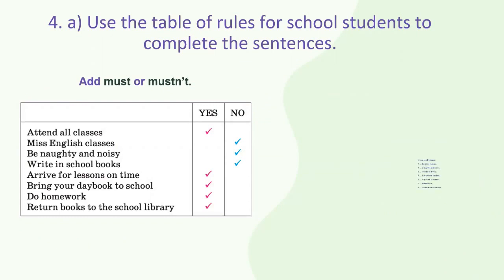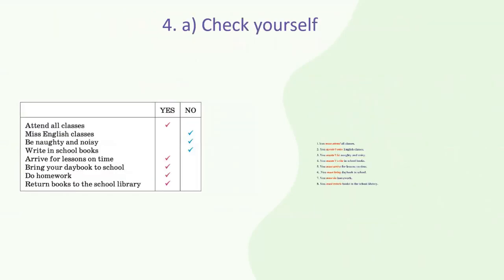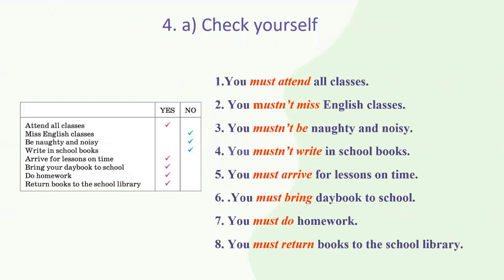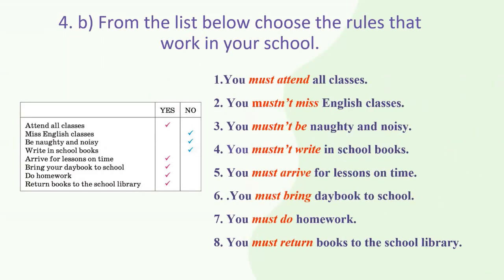Add must or mustn't. Pause the video — it is necessary for completing the exercise. Now let's continue and check yourself. From the list below, choose the rules that work in your school. Must you attend all classes? Must you not miss English classes? Mustn't be naughty and noisy. Mustn't write in school books. Must arrive for lessons on time. Must bring day book to school. Do homework. Return books to the school library.